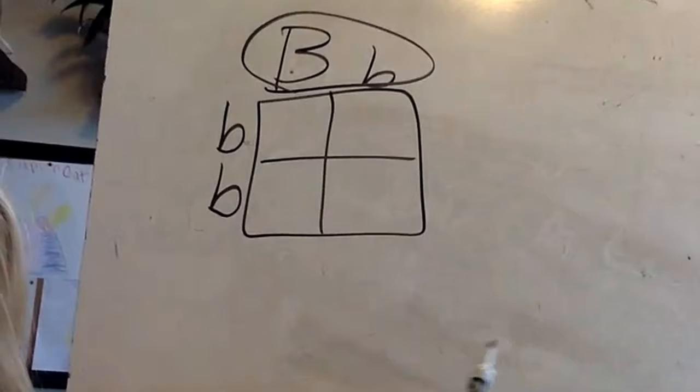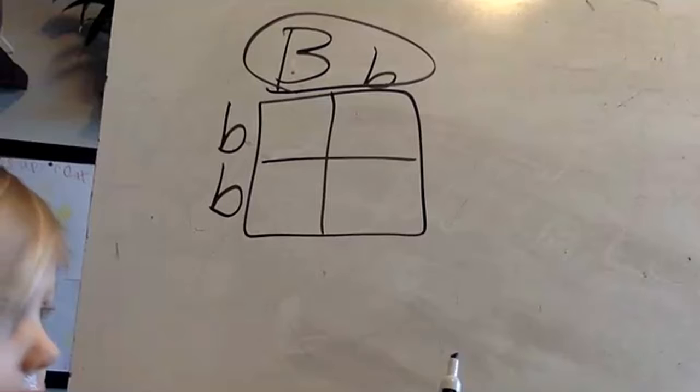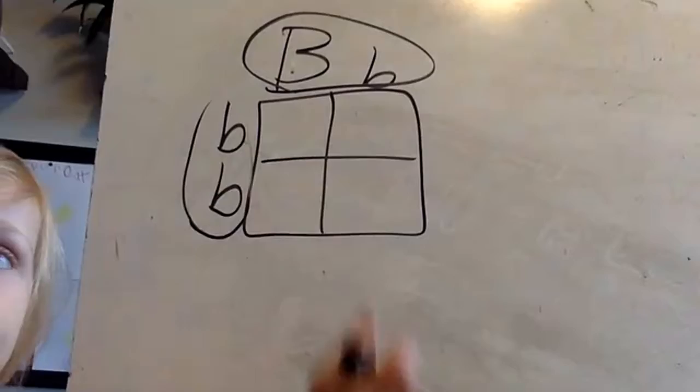So Anderson, if we have a black allele and a white allele together, what color are they going to be? Black — good job. And if they have two white alleles, what color will they be? White — Anderson was right this time.